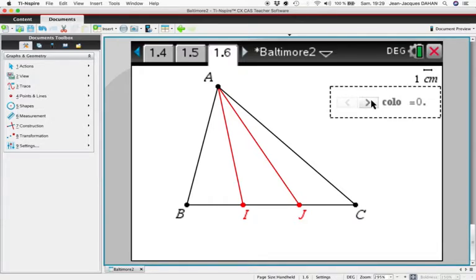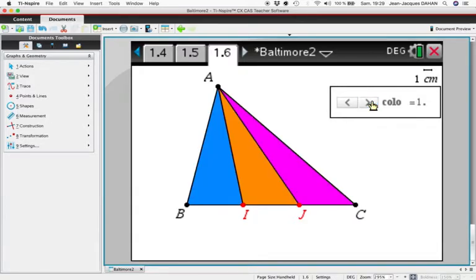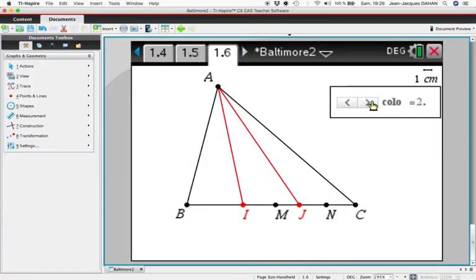So we know that these three triangles have the same area. If we do the same work as we did before, if we construct, from here, line AM and AN.